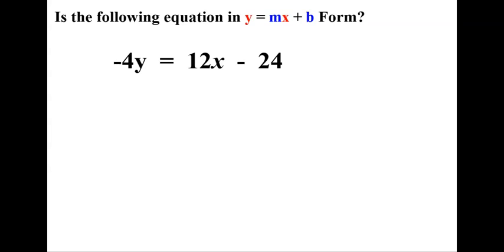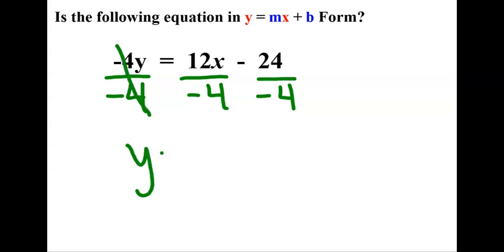Next one. My coefficient is timesing by negative 4, so I'm going to divide all three items by negative 4. And be careful here, you're going to see some sign changes. So y is equal to negative 3x, and a negative 24 divided by a negative 4 is a positive 6. So watch your signs when you divide by a negative.